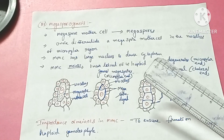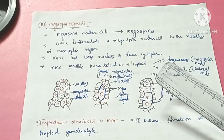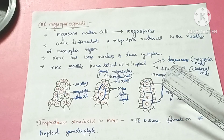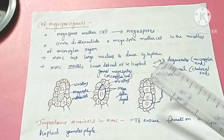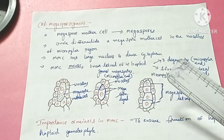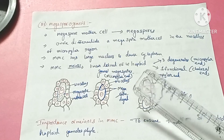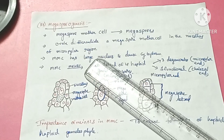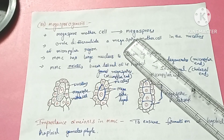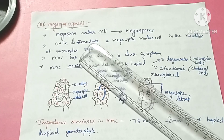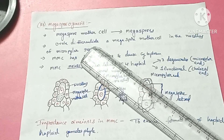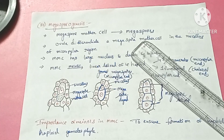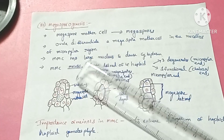Hello everyone, this is Latha Akula. In this video we are going to study about megasporogenesis. In the last video we completed the structure of gynoecium, structure of ovule, and types of ovules. Now we'll see what is megasporogenesis. The formation of haploid megaspores from the diploid megaspore mother cell is called megasporogenesis.